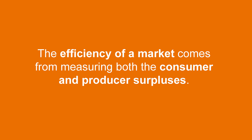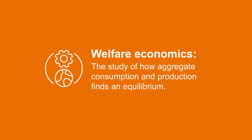So this exercise showed us that in a market we have two kinds of surpluses. Consumer surplus is the benefit that buyers receive from participating in a market, and the producer surplus is the benefit that the sellers receive. It is therefore natural to use total surplus as a measure of society's economic well-being. Total surplus in a market is the total value to buyers of the goods, as measured by the willingness to pay, minus the total cost to sellers of providing those goods. If an allocation of resources maximizes total surplus, we say that the allocation is efficient. The efficiency of a market comes from measuring both the consumer and the producer's surpluses. This is a part of a study called Welfare Economics — the first example of economics being used to study equality among economic agents. This theory was followed by many other currents with different interpretations.